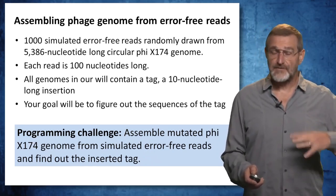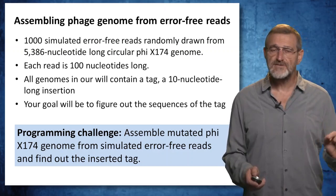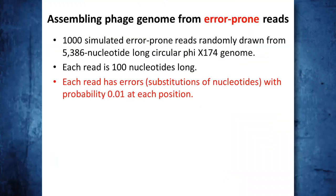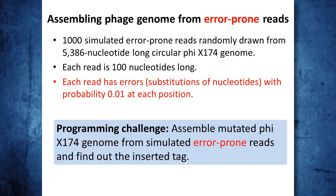Your programming challenge will be, after you've formulated this problem, to assemble the mutated phage genome from simulated error-free reads and find out the inserted tag. After you assemble the phage genome from error-free reads, your more complex task will be to assemble the same genome from error-prone reads. In this case, each read will have errors — only substitutions of nucleotides, no insertions and deletions — with probability 1% at each position. You have to formulate a rigorous algorithmic problem that adequately models genome assembly from error-prone reads, and then solve the programming challenge of assembling the mutated phage genome from simulated error-prone reads, finding the inserted tag.